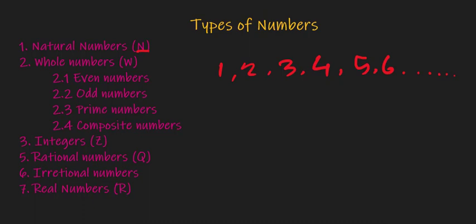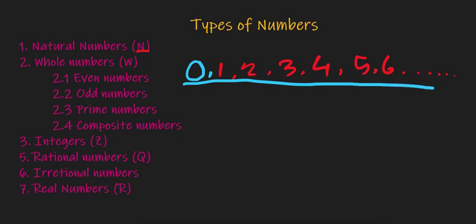The second type of number is whole number. What is a whole number? If we just add 0 to the series of natural numbers, we actually get the whole numbers. There are four types of whole numbers.